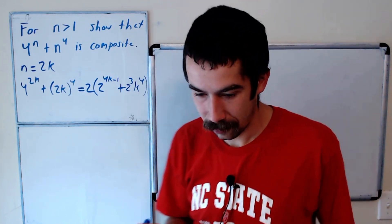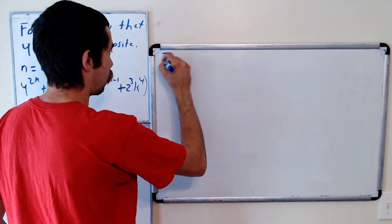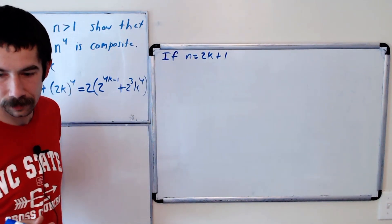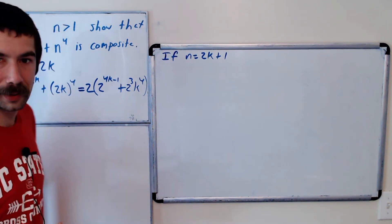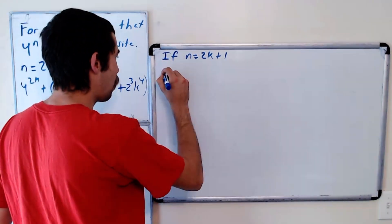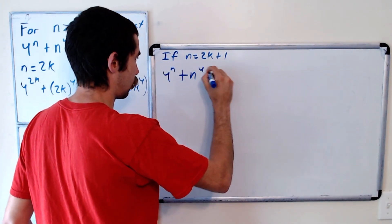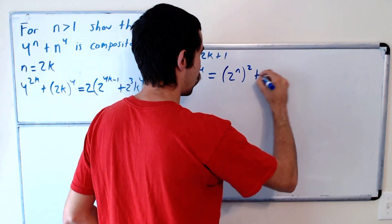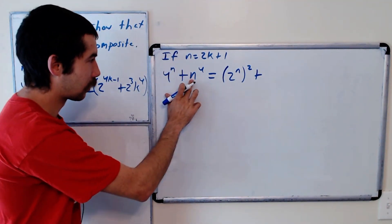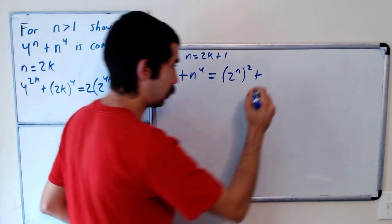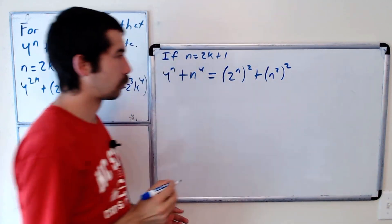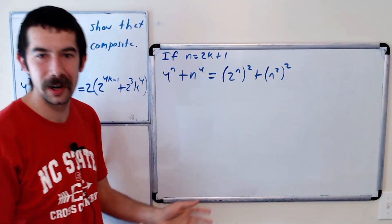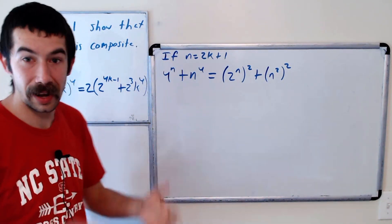But what if n is odd? If n is odd, so n equals 2k plus 1 for some k, we want to factor 4 to the n plus n to the 4. The way we're going to do that: notice that 4 to the n is 2 to the n all squared, and n to the 4 is n squared all squared. So we want to write this as a perfect square, subtract something off to make it a perfect square, and then factor using the difference of squares — at least that's the goal.